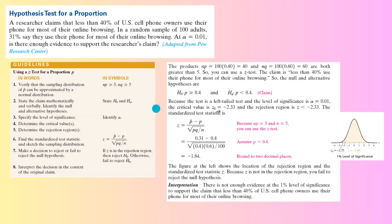Now that we found the Z sub 0, we can identify the rejection region. Any number less than negative 2.33 is in the rejection region. So we need to find the standardized test statistic to decide if that number is inside the rejection region or not.